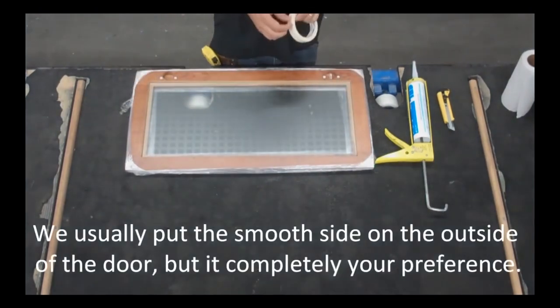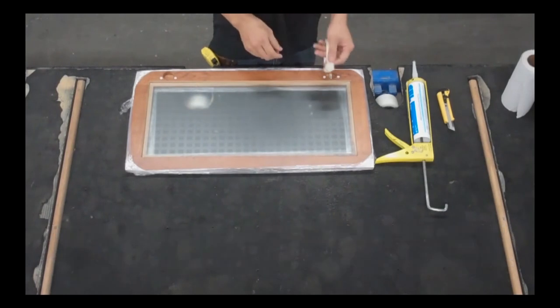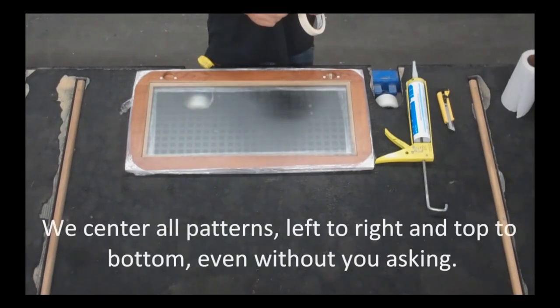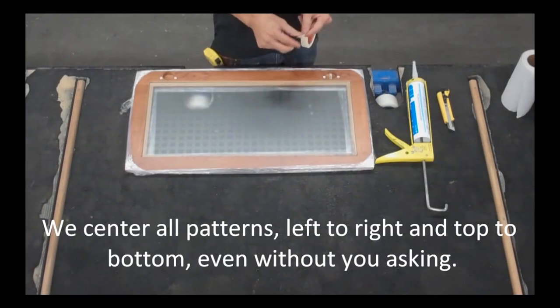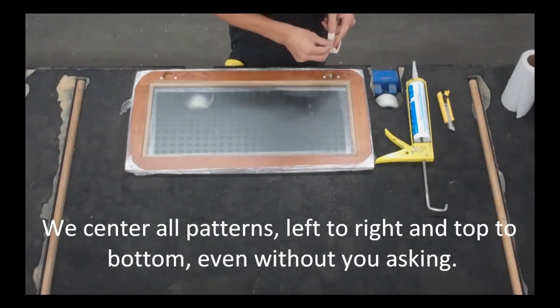So now that we have the glass in the door, the first thing we want to do is tape the door. What I like to do is start by folding over the end of the tape onto itself to give us a little tab. That will make it easy for us to pull up the tape when we're done.